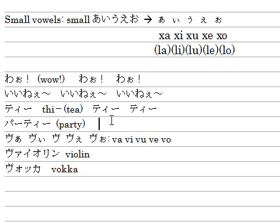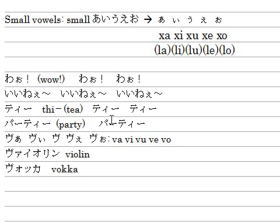The next example is パーティ (Party) — maybe your favorite activity! Type P-A for pa, then a dash for the long vowel, then T-H-I because we just learned that ティ is T-H-I. Hit the space key to confirm. パーティ！いいですね！